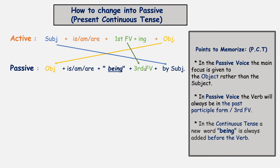The first form plus -ing will change into the third form — past participle. Now here is the most important part to memorize in the continuous tense. Listen very carefully: in the continuous tense, a new word 'being' is added before the verb. If you see that the tense is in the continuous tense in the passive voice, you will always add 'being' before the third form of the verb.